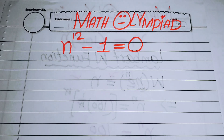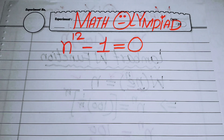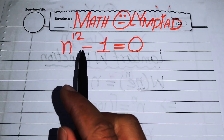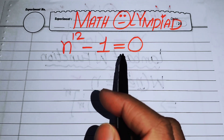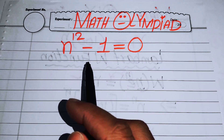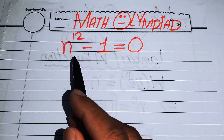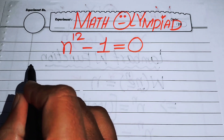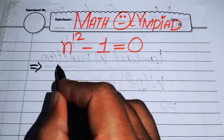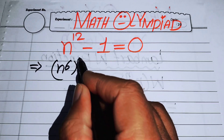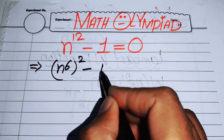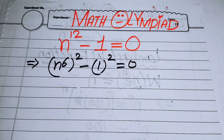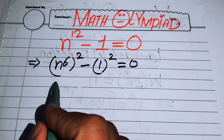Hello everyone, welcome back to the Map of Mathematics. In this video we are going to solve this nice algebra problem: n to the power of 12 minus 1 equals 0. We will find all the twelfth roots of this equation. The very first thing we are going to do is rewrite this equation as n to the power of 6, whole squared, minus 1 squared equals 0.